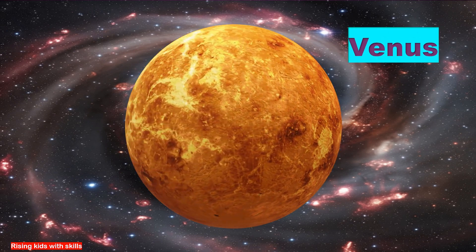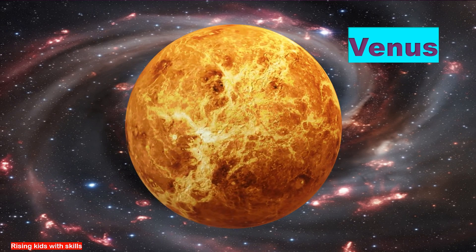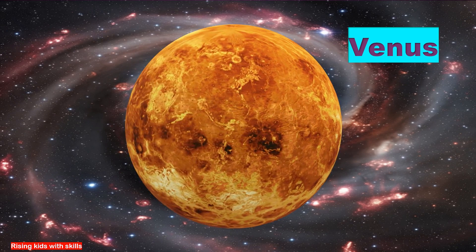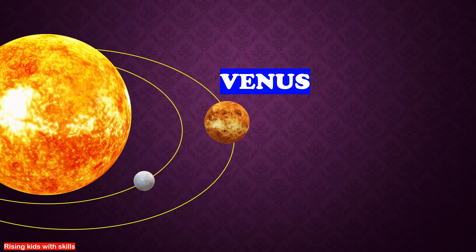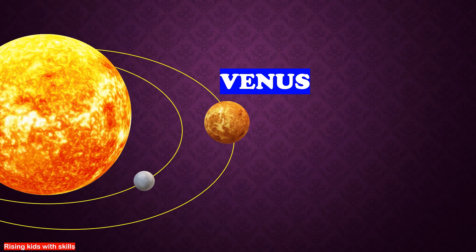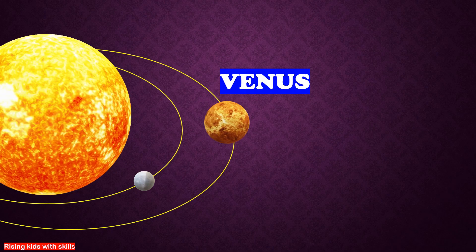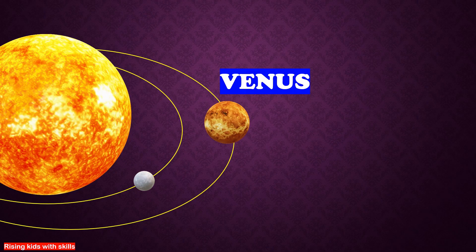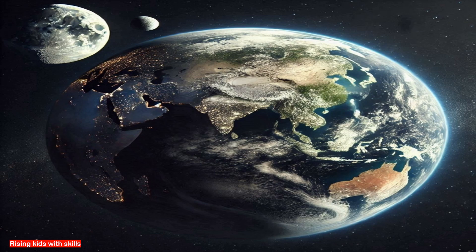This is Venus, the second and the hottest planet of the solar system, even hotter than Mercury. Venus is covered in thick clouds that trap heat. Sometimes called Earth's twin because it's similar in size.